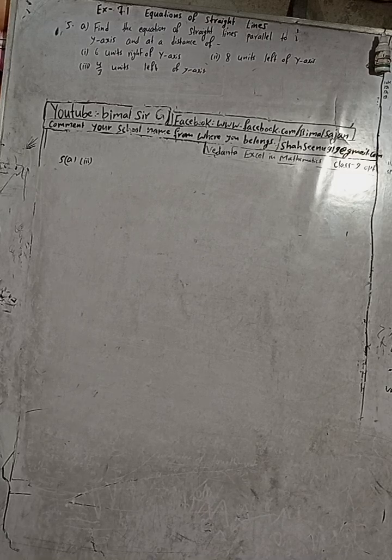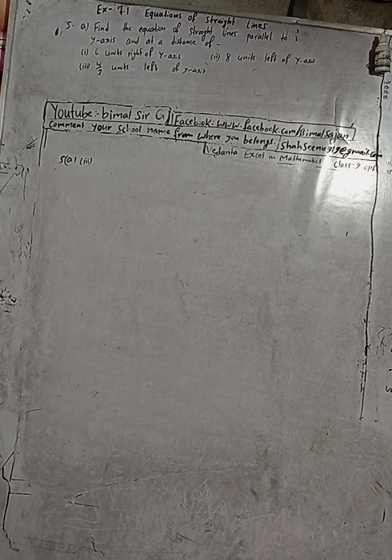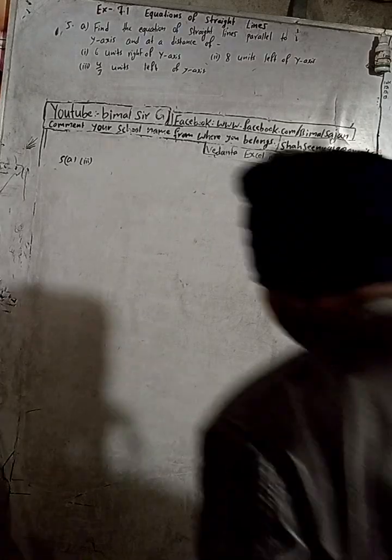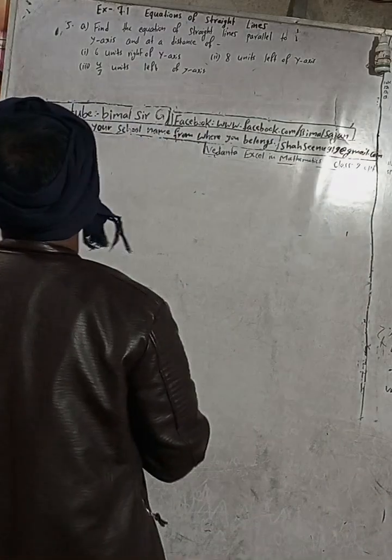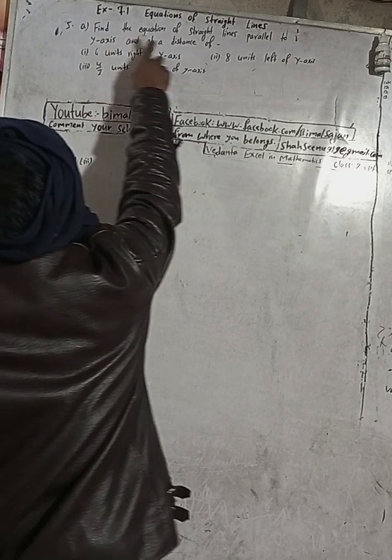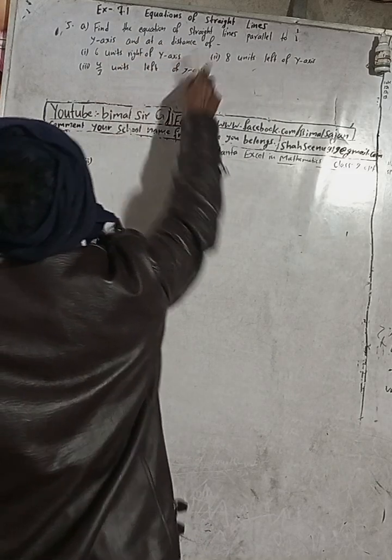Here the question is 5A of SI 7.1, equations of straight lines — Vedant Excel in Optional Mathematics class 9. Don't forget to check the playlist; you will get a lot of solutions. The question is: find the equation of a straight line parallel to the y-axis and at a distance of...